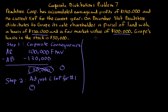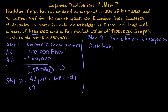Now we go to step three — the consequences to the shareholder, Grape. The first part is to determine the amount of the distribution. A distribution equals actual cash received plus the fair market value of non-cash property received, minus any liabilities on that property the shareholder must assume. Here there are no liabilities on the land and Grape receives no cash, so we use the fair market value of the land. The distribution amount is $100,000.